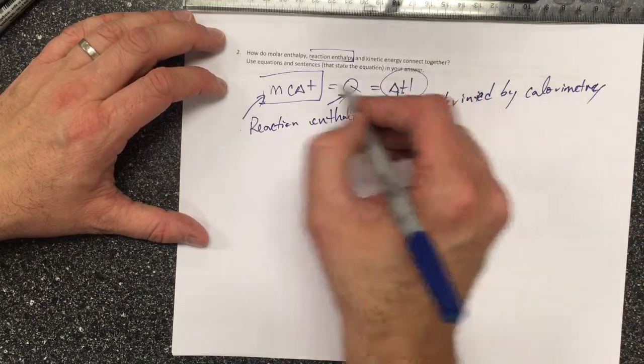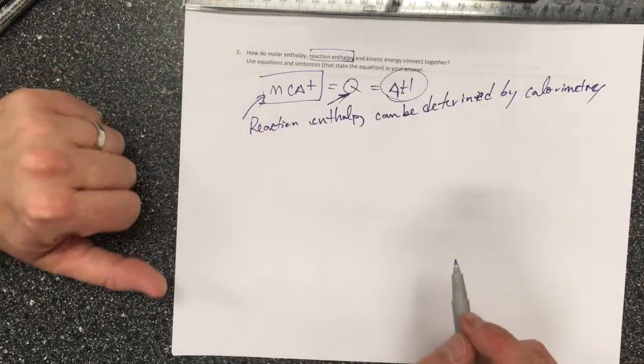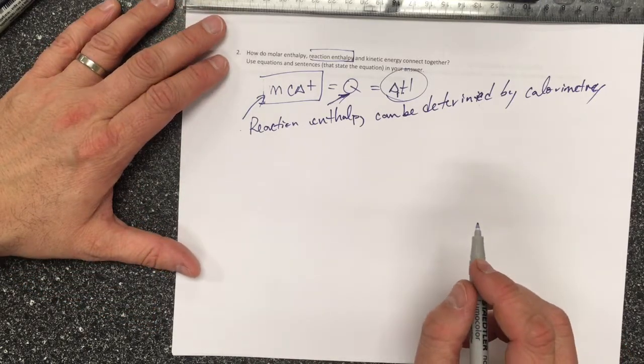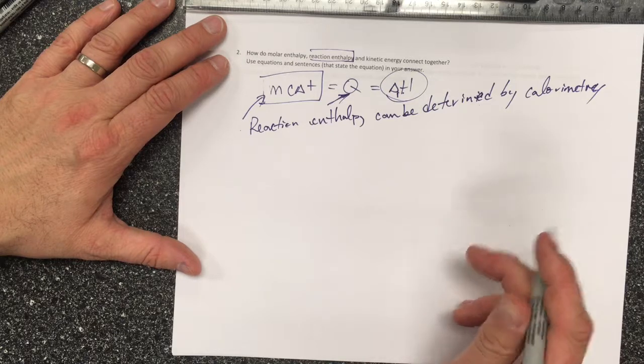The reaction enthalpy is the same as the energy measured in the calorimeter, as long as the calorimeter isn't losing too much energy to the environment. So long as it's fairly well insulated, ideally isolated, this works.